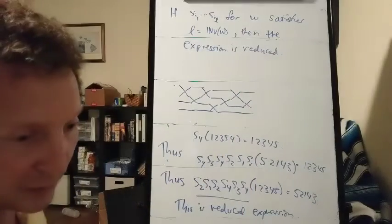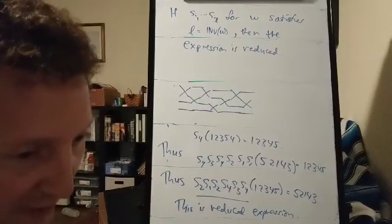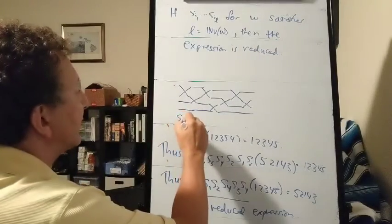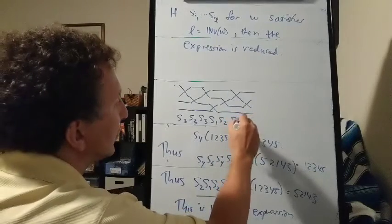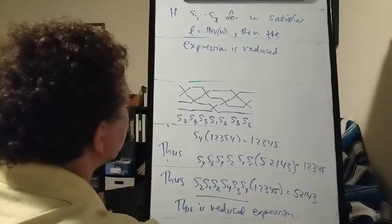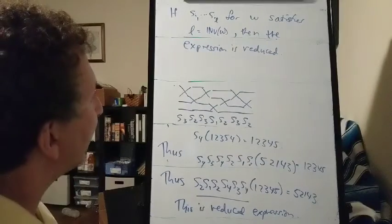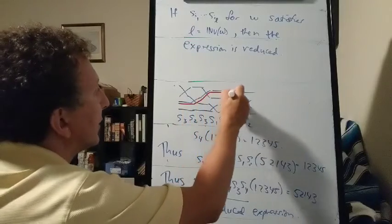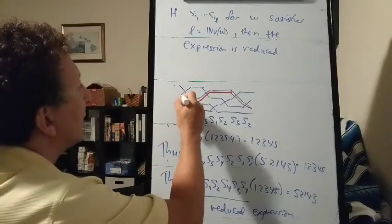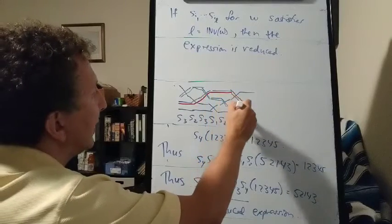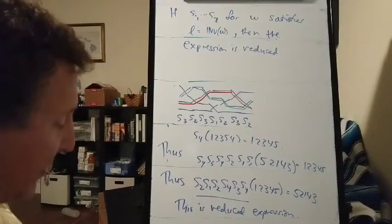And the way I can see that this is not reduced, is that if there's any two paths that cross more than once, then the expression is not reduced. So this stands for S3, S2, S3, S1, S2, S3, S2. And I can see I found two wires, this one and the next one that crosses it once, and then crosses it again right here. So if there's a pair of wires that cross each other more than once, then the expression is not reduced.